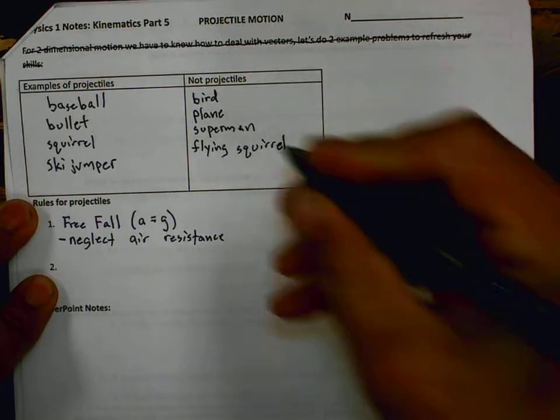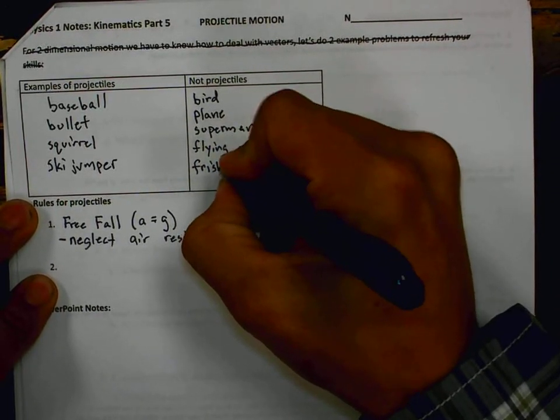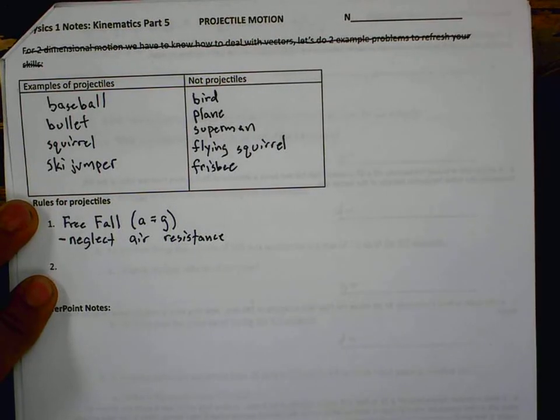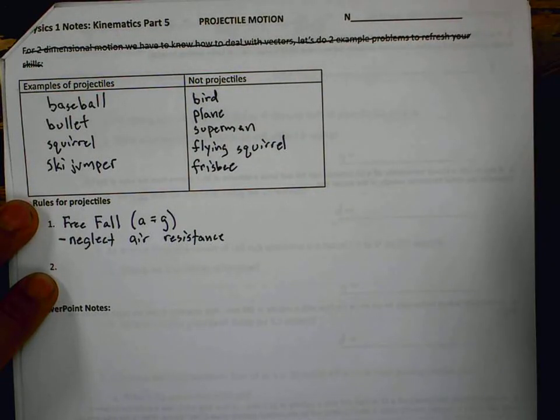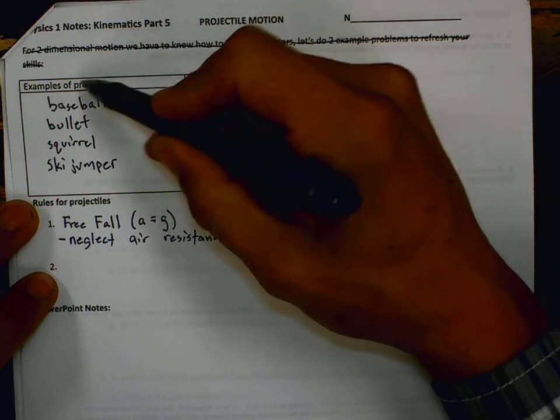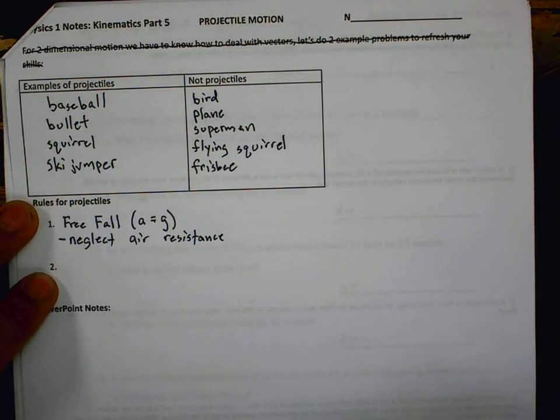It means we have to be able to neglect air resistance. So for example, a frisbee would not be a projectile because it operates on principles of air resistance. It kind of floats on the air. A boomerang turns around. It operates on air resistance. Those would not be projectiles. A piece of thrown paper is not going to be a projectile because air resistance is going to matter. Now, there is air resistance on these things, but we can mostly neglect it. We can say it's negligible.